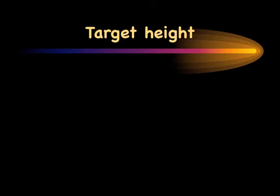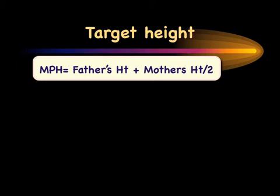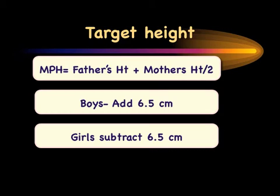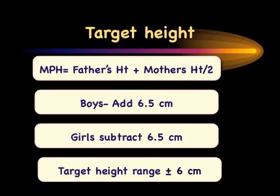Growth assessment should always include parental expectation through target height. Mid-parental height is calculated as father's height plus mother's height divided by 2. For boys, add 6.5 centimeters; for girls, subtract 6.5 centimeters to get the target height. This 6.5 cm figure derives from the average male-female height difference of approximately 13 centimeters across most cultures. Target height is then expressed as a range of plus or minus 6 centimeters.